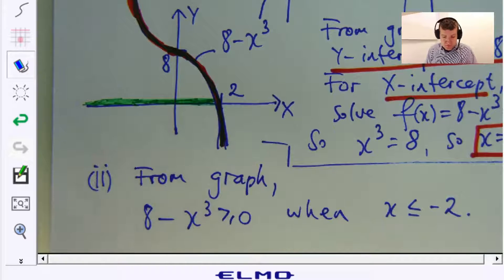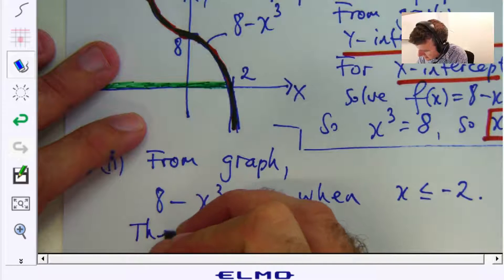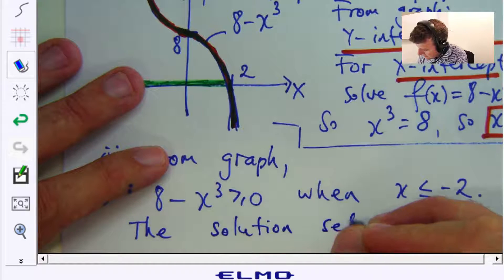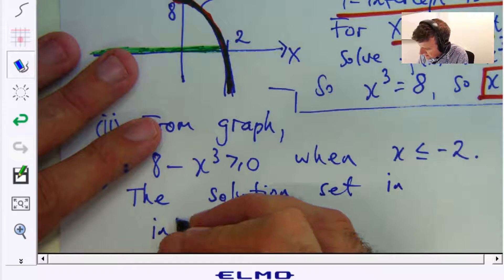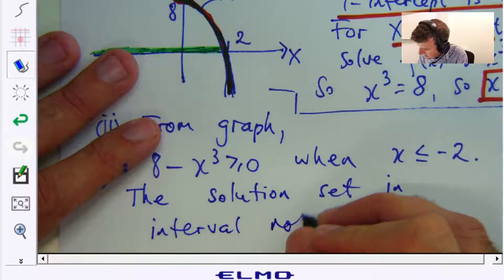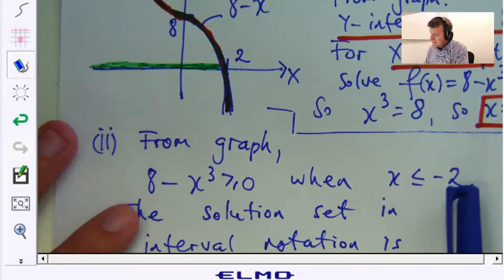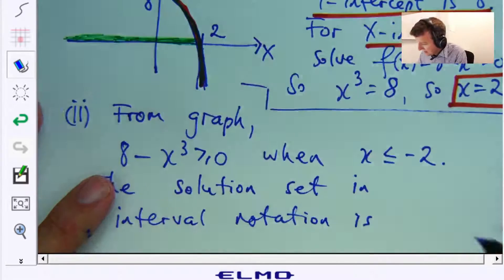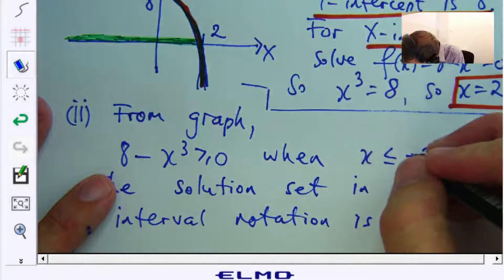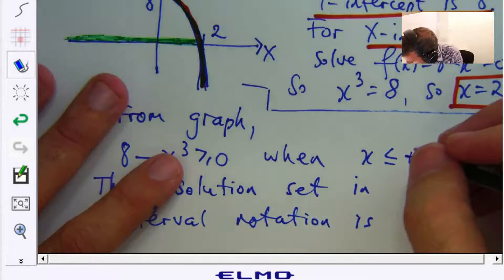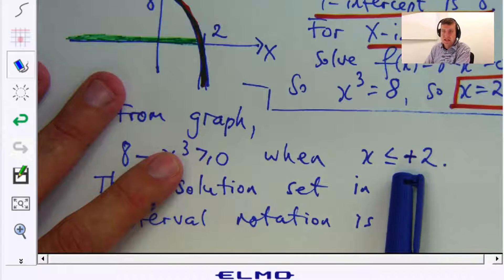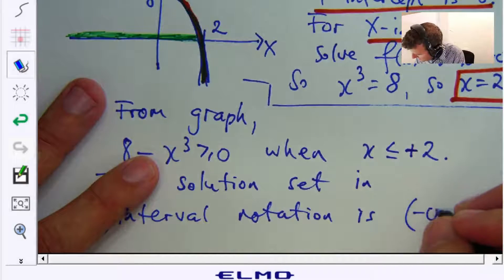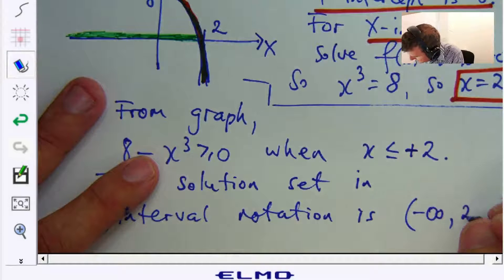Now if I wanted to write this in interval notation, I can write it like this. The interval from negative 2 off to negative infinity, or from negative infinity to negative, to, oh sorry, positive 2. Not negative 2. Positive 2. Let me fix that up. Make sure you've just changed that. Sorry about that. I put negative 2. It should be positive 2.